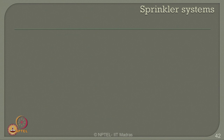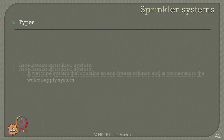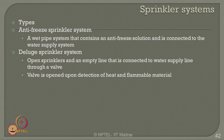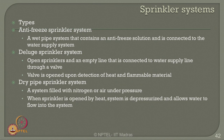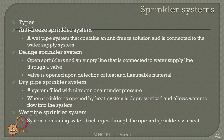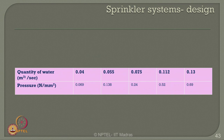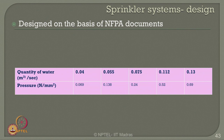Sprinkler systems are also an effective design methodology to prevent or reduce explosion damages. Different types include: anti-freeze sprinkler systems, which are wet pipe systems containing an anti-freeze solution connected to the water supply; deluge sprinkler systems consisting of open sprinklers and an empty line connected to the water supply through a valve opened by reduction of heat; dry pipe sprinkler systems filled with nitrogen or air under pressure, where sprinklers open by heat, the system depressurizes and allows water to flow; and wet sprinkler systems which contain water discharged through open sprinklers via heat.